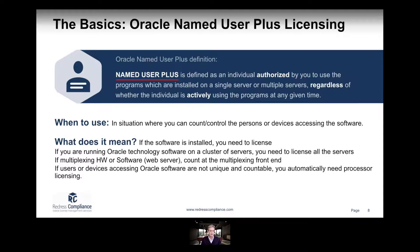You use NUP licensing in a situation where you know who has access to the actual database. You count the number of users and devices that have access to the software. NUP is for controlled environments where you count and control the people or devices accessing the software, whereas processor licensing is for situations where you don't have that control and need unlimited access.